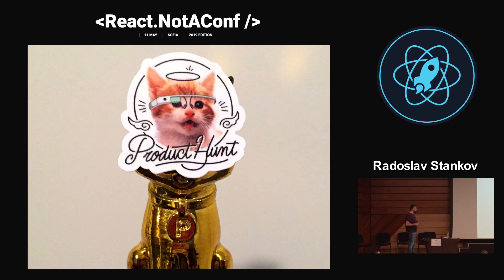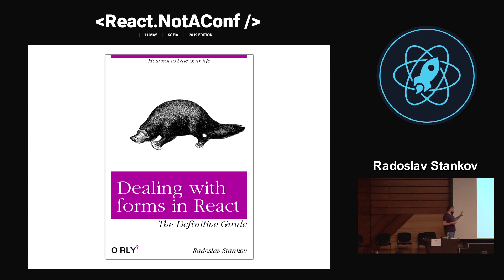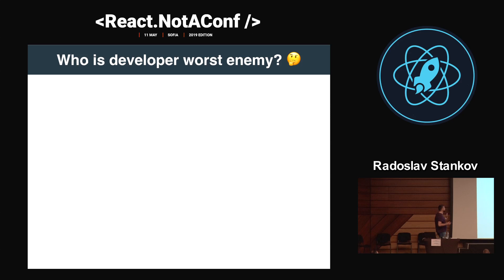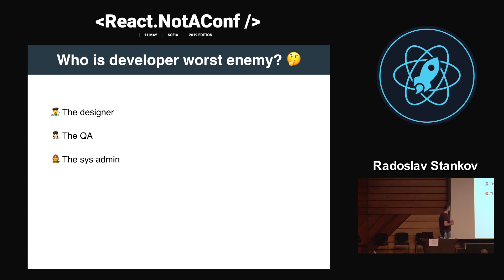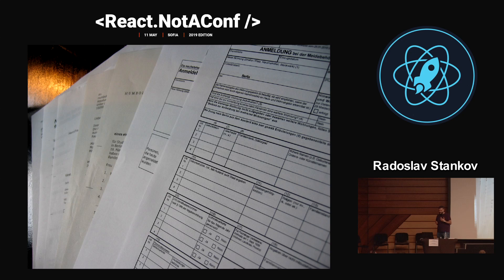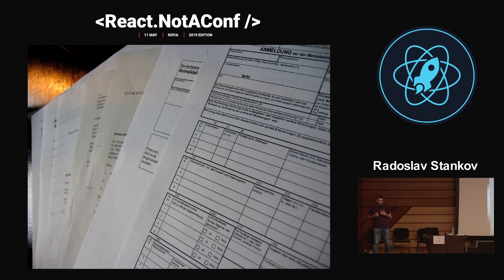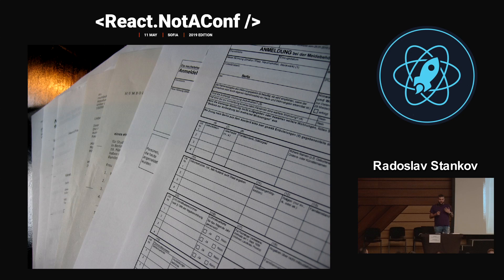I work at a company called Product Hunt, but today I'm not going to talk about that. I'm going to talk about dealing with forms in React. Before I start, let's do a survey: who is the developer's worst enemy? Is it the designer? Is it the QA person? Is it the sysadmin? Is it the project owner? Or is it forms? For me, it's forms — this is the thing which is the bane of our existence and we are constantly trying to handle them, and they're very complicated.